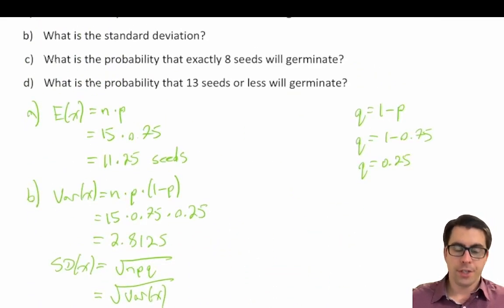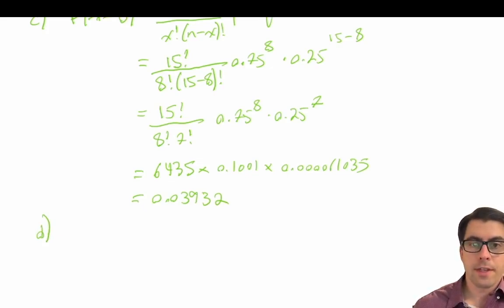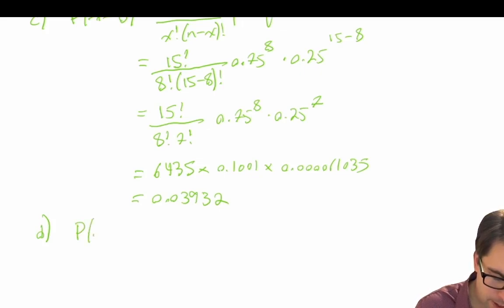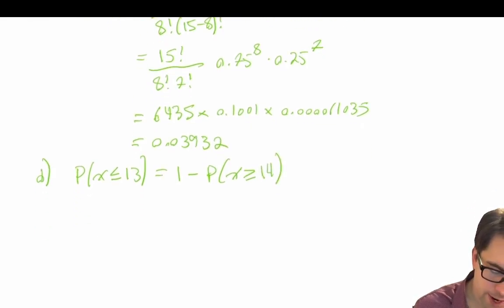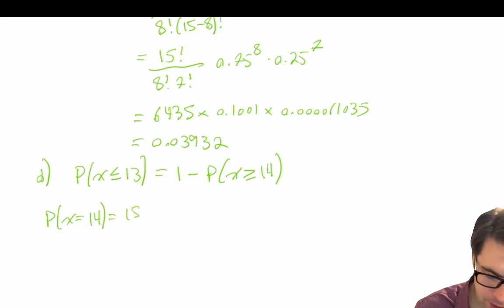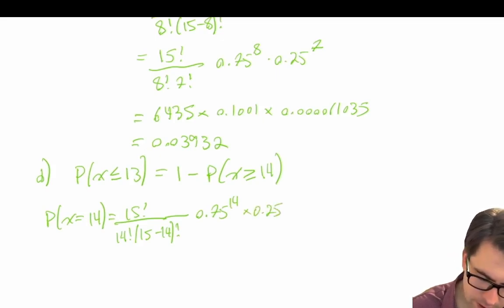The last part of this question asks: what is the probability that 13 seeds or less will germinate? The probability that x is less than or equal to 13 is equal to 1 minus the probability that x is greater than or equal to 14. So let's calculate the probability that x equals 14: 15 factorial divided by 14 factorial times 15 minus 14 factorial, times 0.75 to the power of 14, times 0.25 to the power of 1.